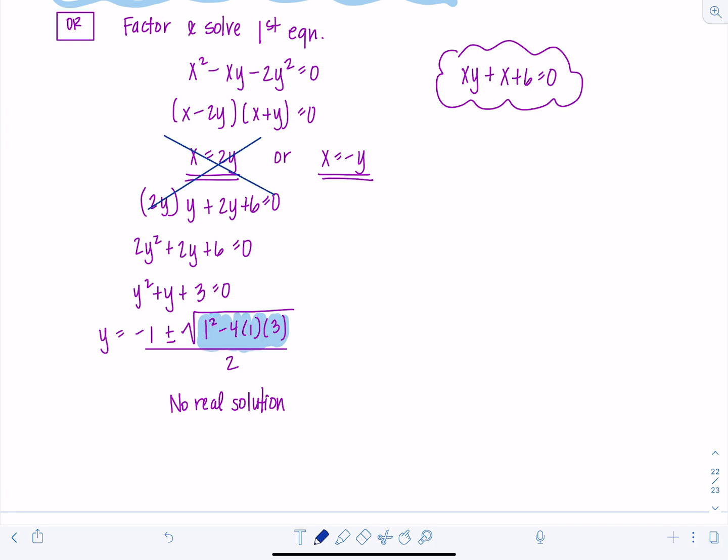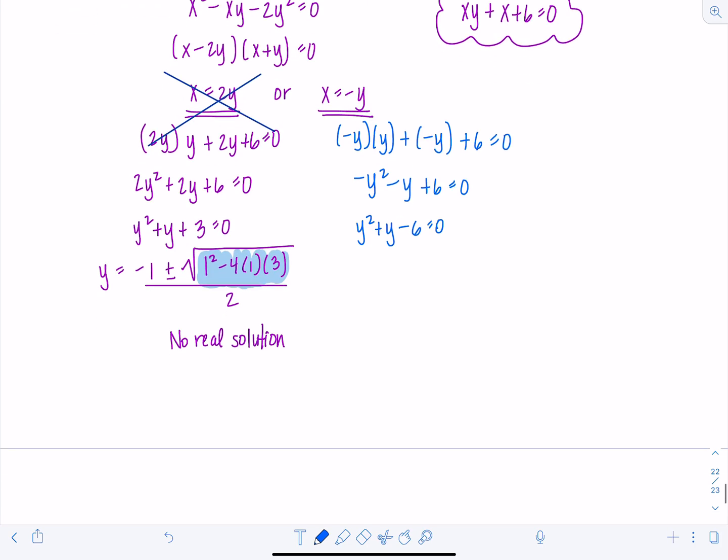So now I'm going to try if x equals negative y. So then I'd have negative y times y plus negative y plus six is zero. So then you get negative y squared minus y plus six is zero. Let's multiply through by a negative so it's easier to factor. So we'll have y squared plus y minus six is zero, which is going to give us y plus three times y minus two is zero. So then I'm left with y equals negative three. Or y equals two.